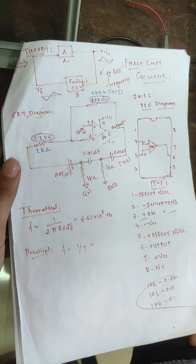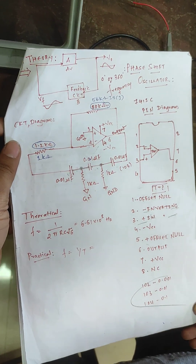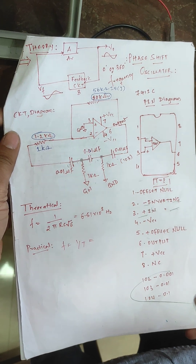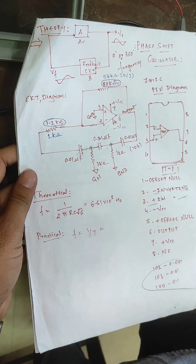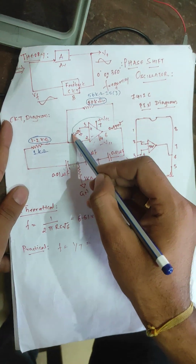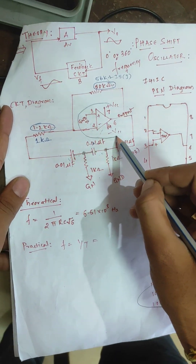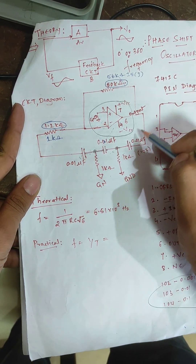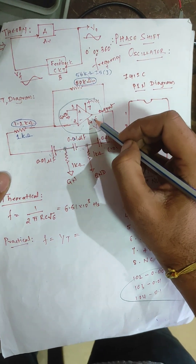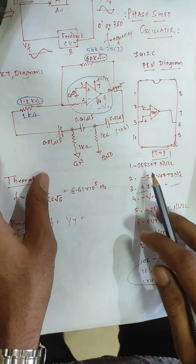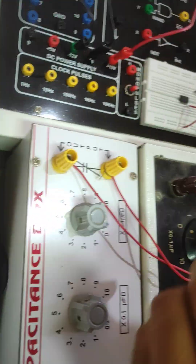Now let us see what apparatuses are required to perform this experiment. Here you can see the op-amp symbol, that is the operational amplifier, which has ideal characteristics. This is the 741 op-amp and here you can see the op-amp.